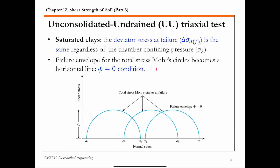Because the deviator stress delta sigma d is the same for all specimens, the radius of the Mohr circles — which is (1/2)(sigma 1 minus sigma 3), or (1/2)(delta sigma df) — is the same for all. So with different values of sigma 3, each corresponding to a different specimen, but the same delta sigma d, if you fit a straight line through the failure points of these Mohr circles, that line is horizontal. This is the failure envelope, and since it's horizontal, the total stress friction angle phi equals zero.